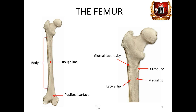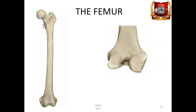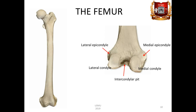The distal epiphysis is represented by the lateral and medial condyles, separated by an intercondylar pit, fossa intercondylaris. On the sides above the articular surfaces of each condyle, small tubercles of the epicondyle are located, epicondylus lateralis et medialis. In front, the articular surfaces of the condyles pass into each other, forming a patellar surface, facies patellaris.